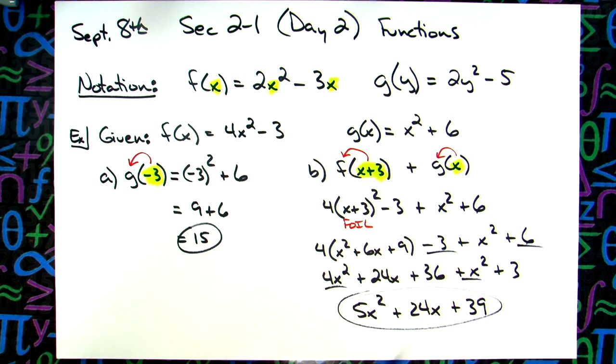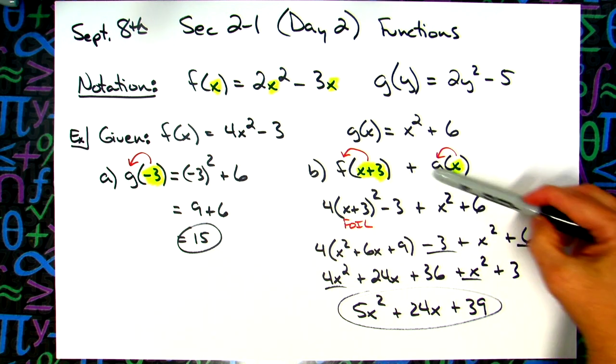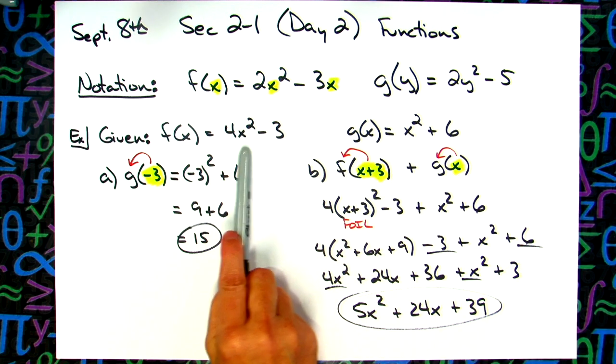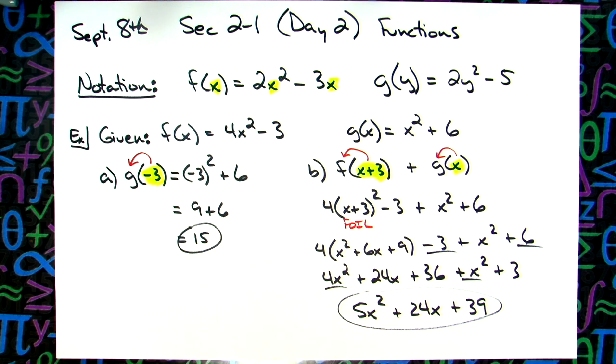So x squared, the 3x and 3x would give you the 6x in the middle, and a 3 squared on the end would give you the 9 minus the 3 plus the x squared plus the 6. Distributing 4x squared, 24x, 36. And then I'm going to put the 3 and the 6 together. I still have some more like terms I can put together. 5x squared plus 24x plus 39. Anybody else get that too? I'm seeing head nods.